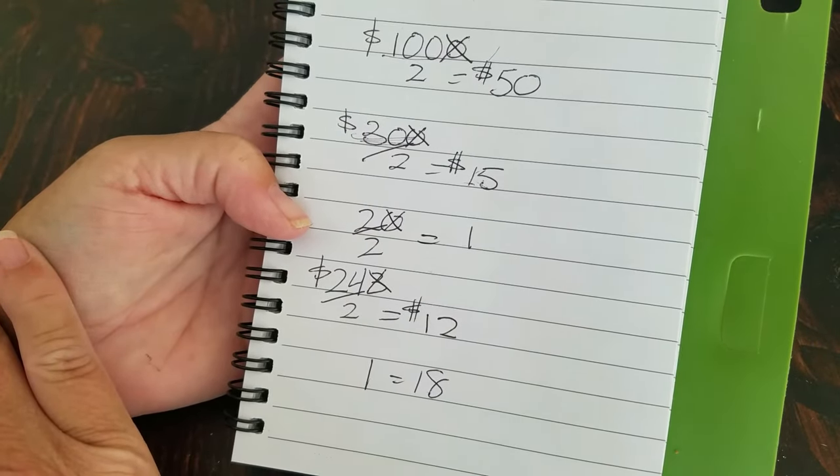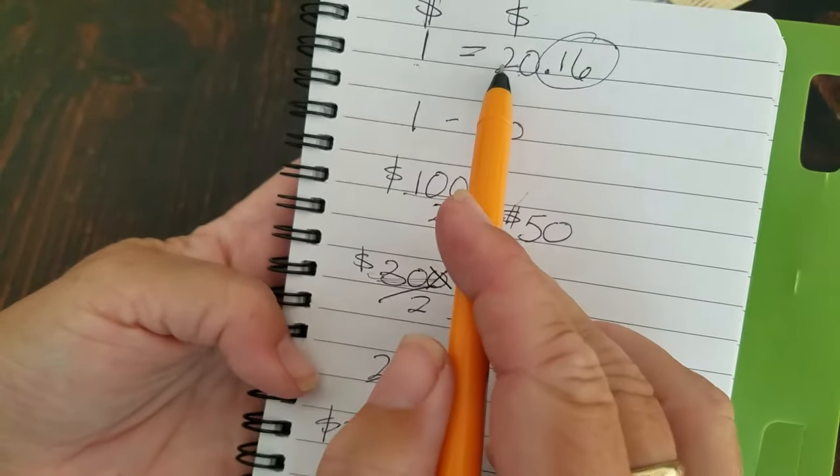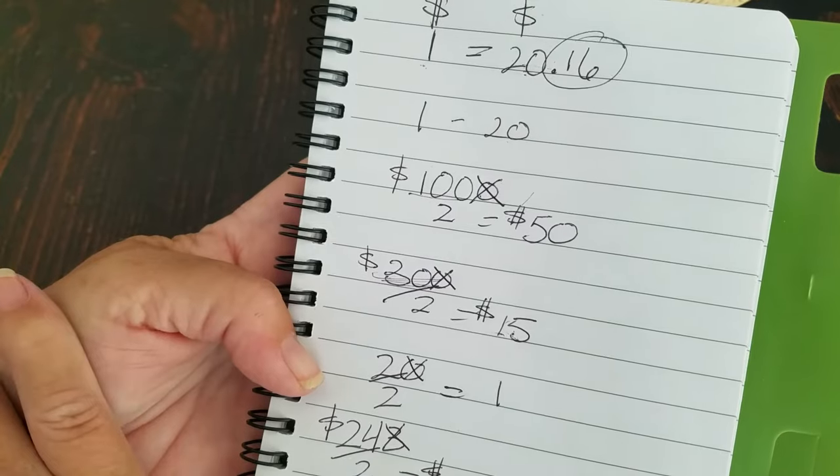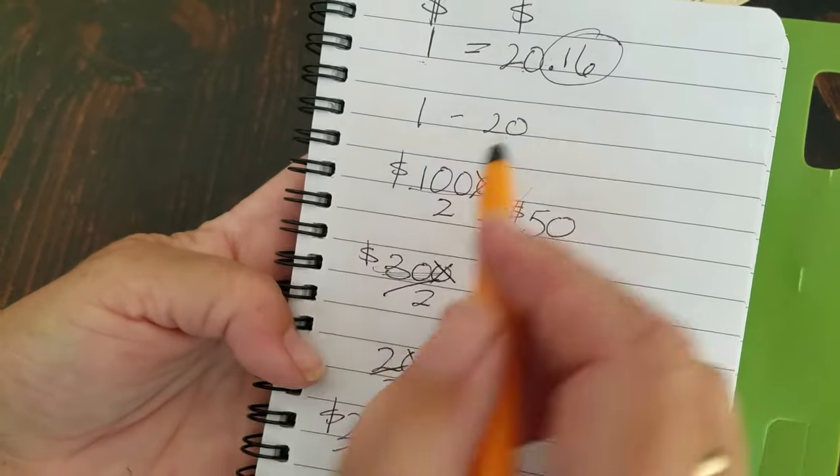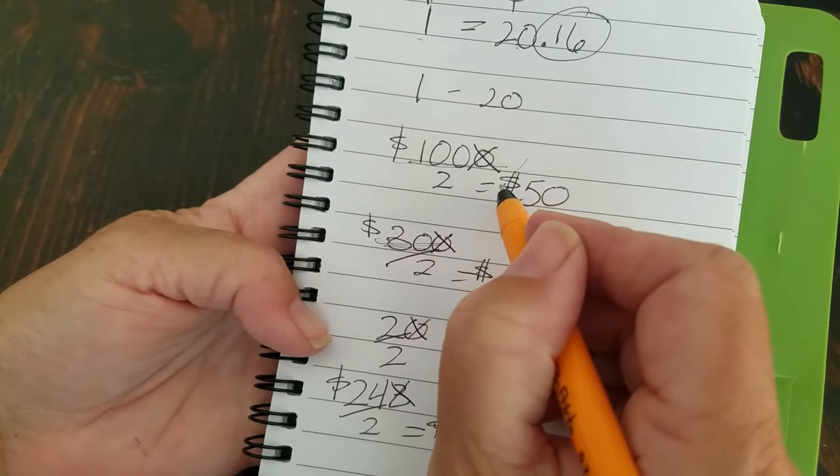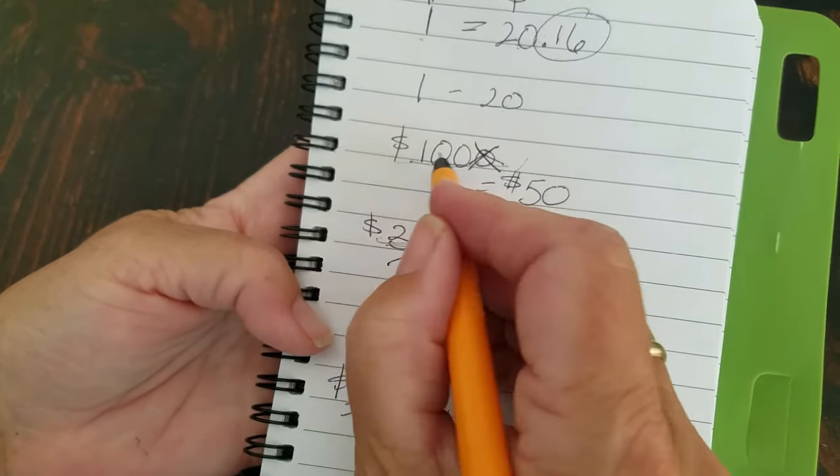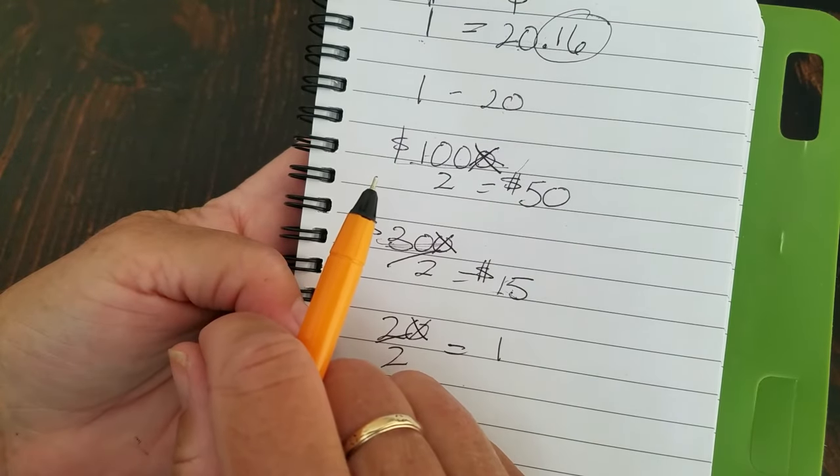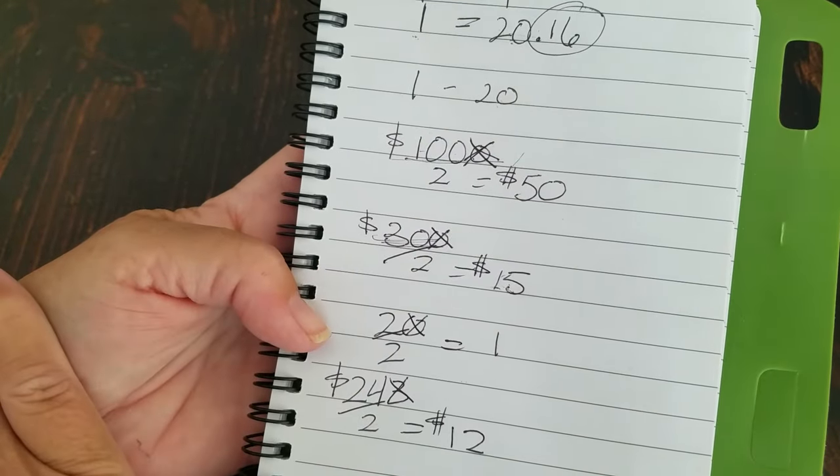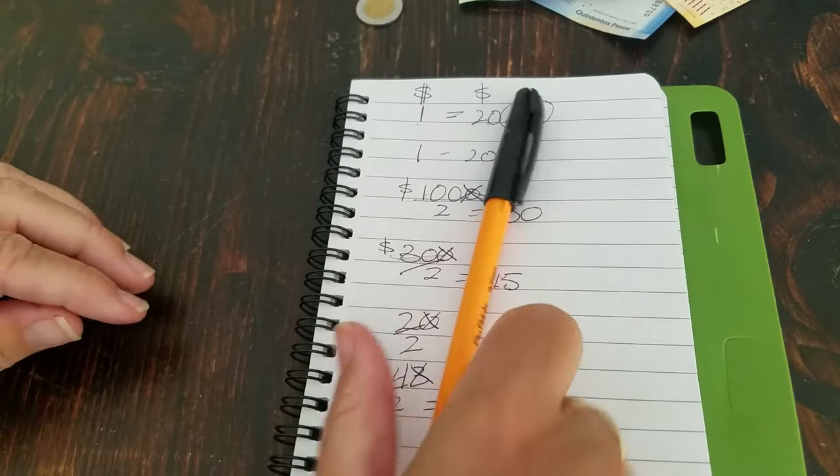It's March of 2022, and again today, 1 US dollar equals 20.16 pesos. And we're using 1 to 20 as our math. And all you do is take the whole number, get rid of the last digit, divide that by 2, and that's your US dollar amount. So there you have it. Let me know if you have any questions.